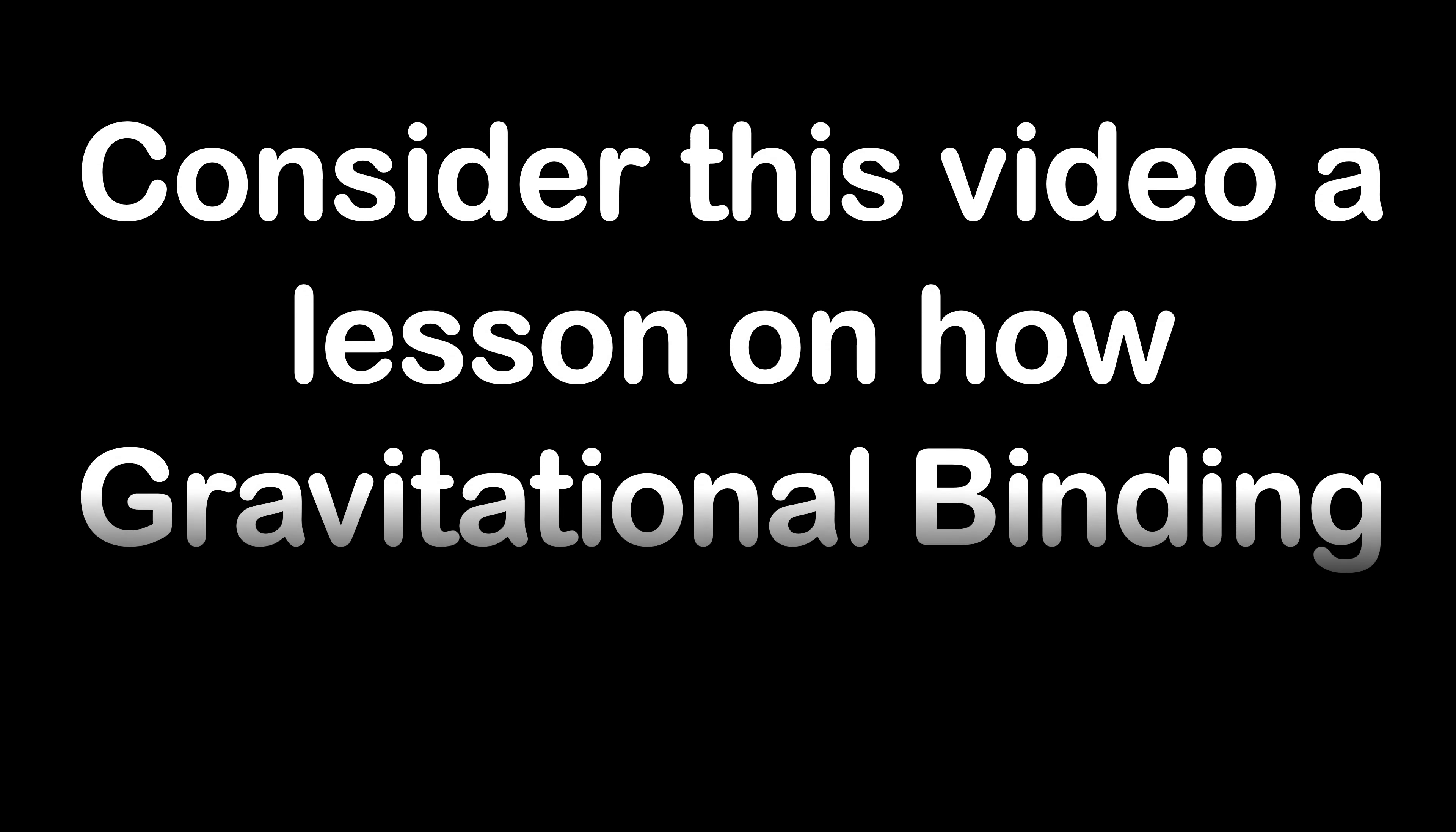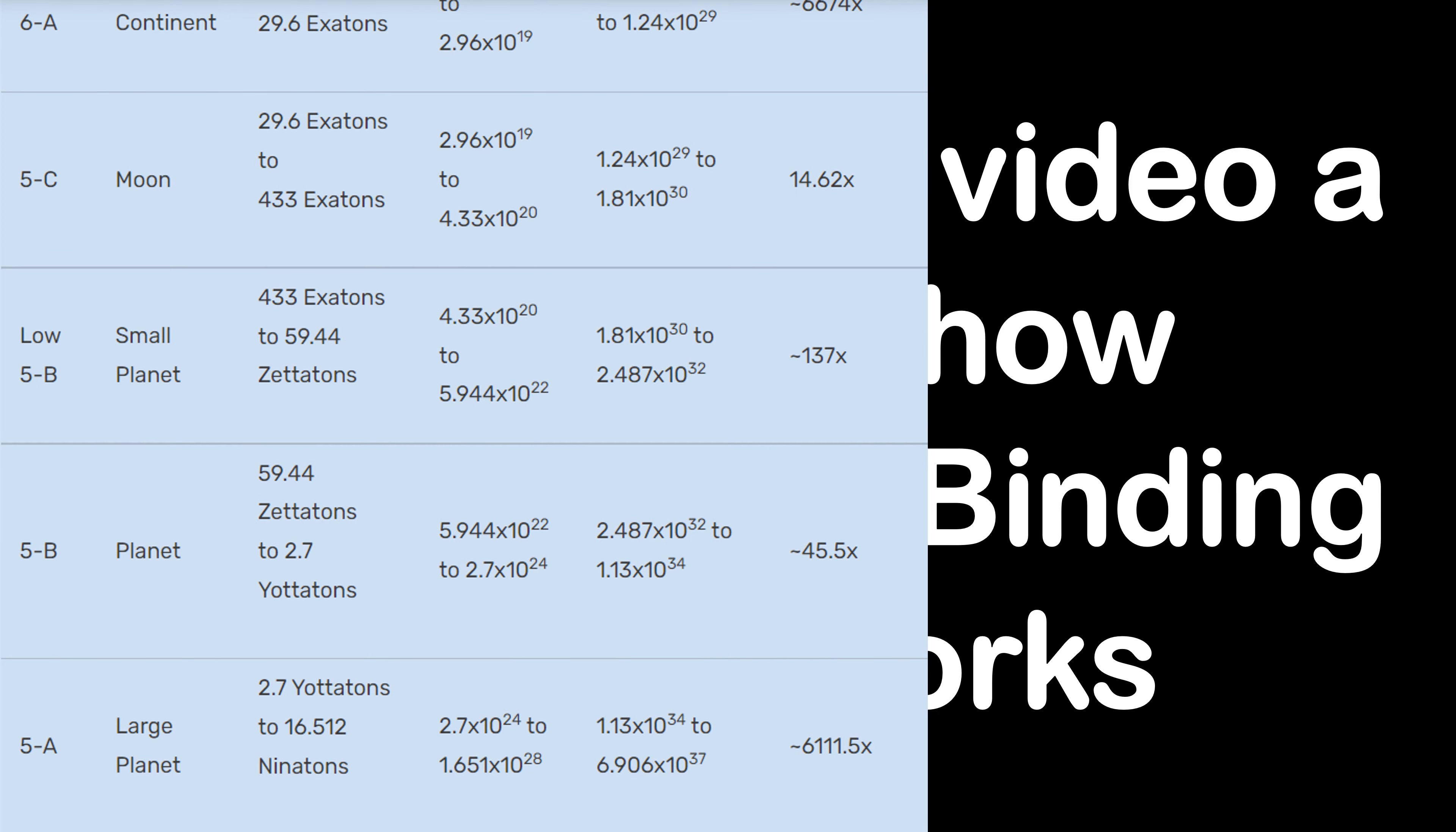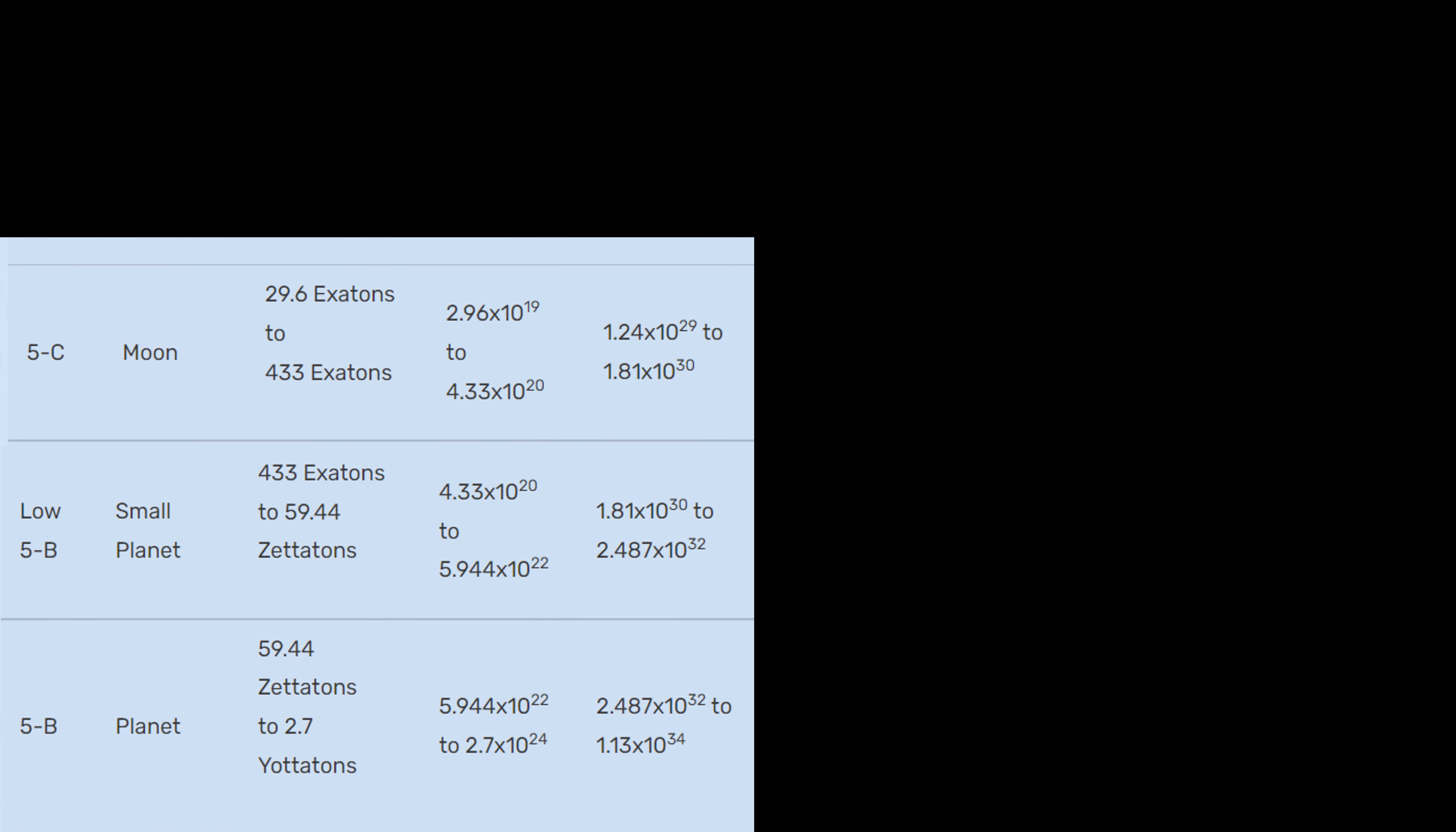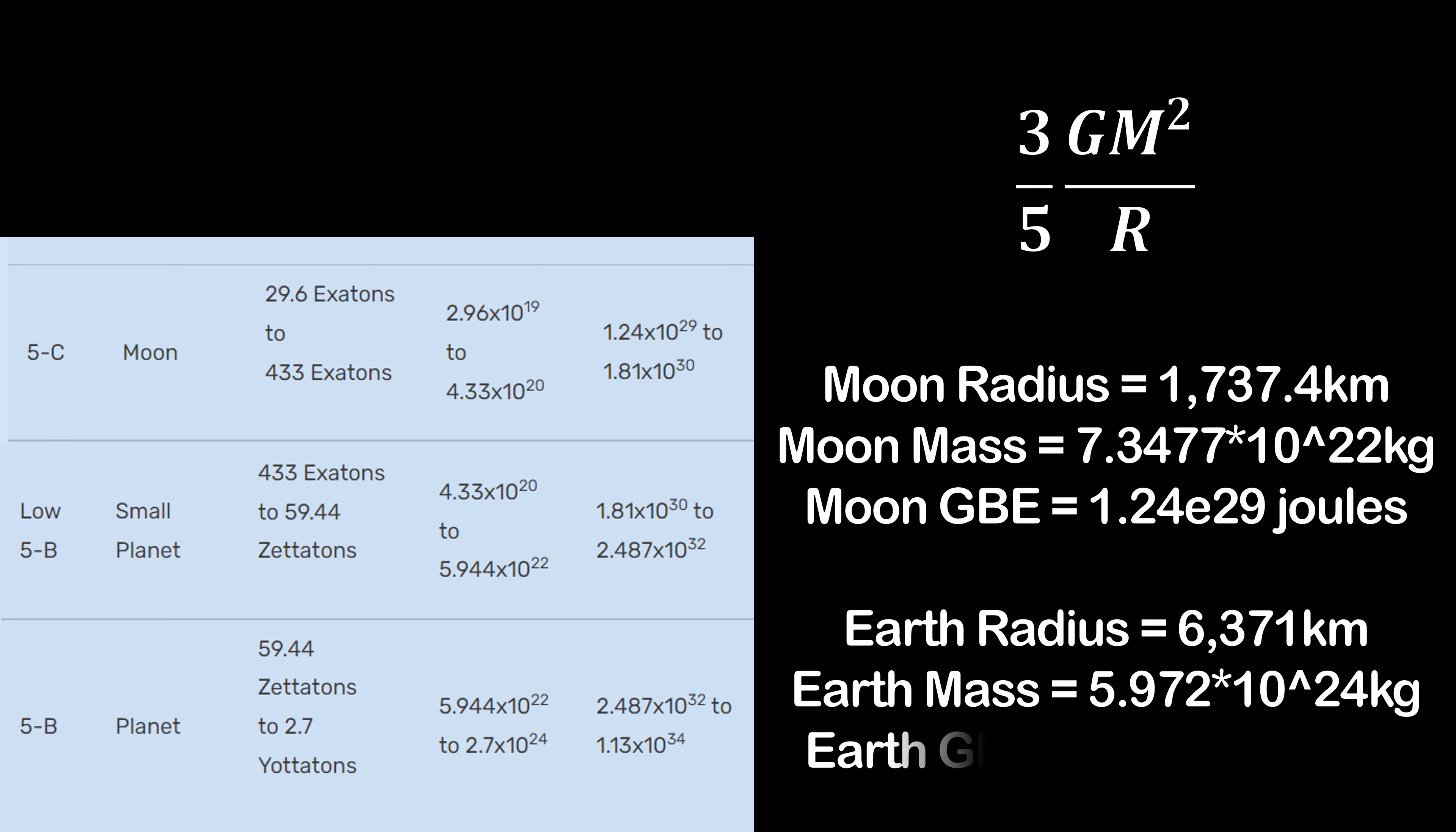Consider this video a lesson in how gravitational binding energy works. I say this because this is exactly how the Versus Battle Wiki's definition for attack potency works with their planet level, moon level, small planet, large planet, all the celestial bodies. For those of you who do not know, this is the equation for gravitational binding energy. What you need is simply the mass and the radius of the celestial body. For example, we do it with the moon here. We get its gravitational binding energy at 1.24 times 10 to the 29 joules, which is of course moon level on Versus Battle Wiki. That's how the tier is made. Do the same with Earth, and we get it at 2.24 times 10 to the 32 joules. This is the transition from small planet up to planet level on Versus Battle Wiki.